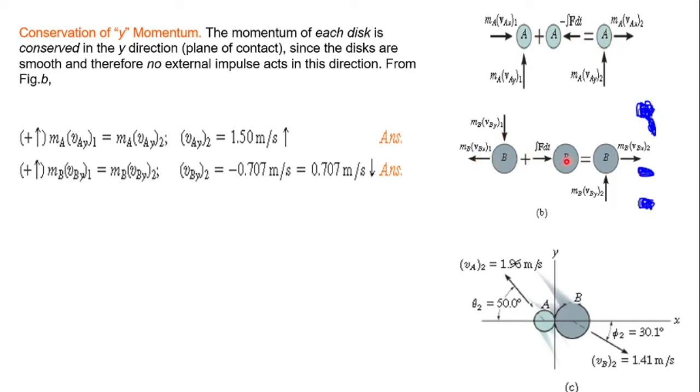The impulse on A and impulse on B. The final diagram shows after impact. After impact we have the velocities in x direction and y direction for both disks, and we need to find the magnitude finally.